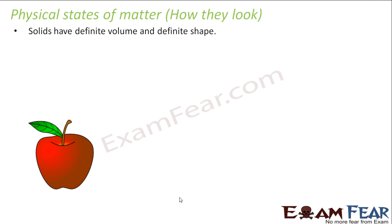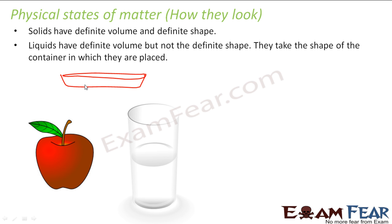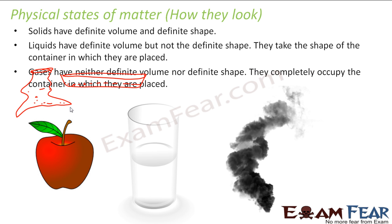For example, a solid like an apple has a definite volume and definite shape. A liquid has a definite volume but no definite shape — if you put it in a bigger jar or a different jar, it takes that shape. A gas doesn't have a definite shape or a definite volume — if kept in a bigger jar it fills the whole space, and in a smaller jar it fills the smaller space.